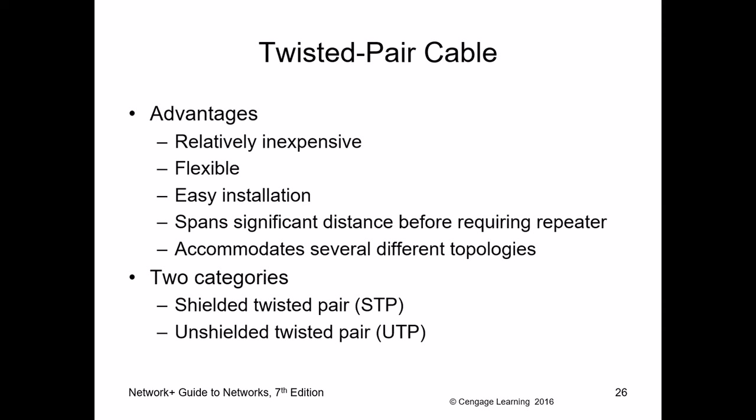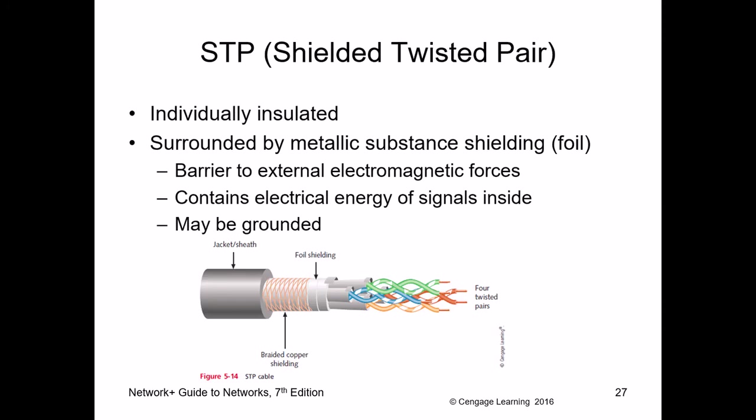Shielded twisted pair (STP) has a braided copper wire threaded around the four pairs to shield them from outside interference. The drawback is that the distance drops to about 25 meters instead of 100 meters, due to capacitance issues from the shielding. Hardly anyone uses STP anymore — in the old days Token Ring used it. If you're worried about outside interference, fiber is probably your only real choice.